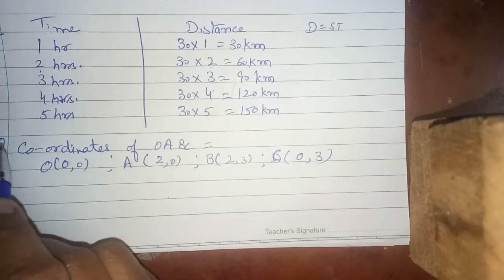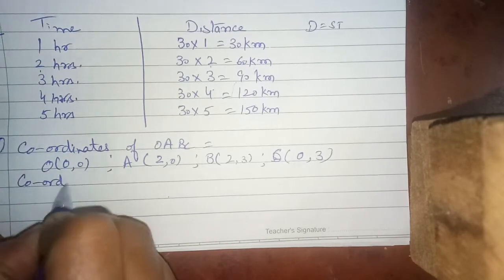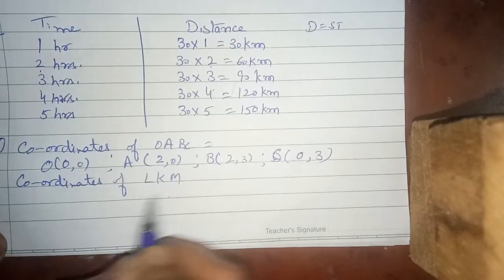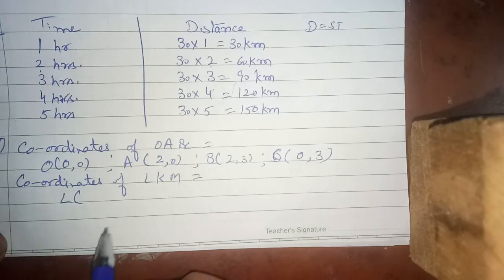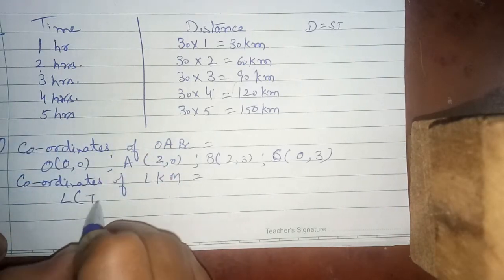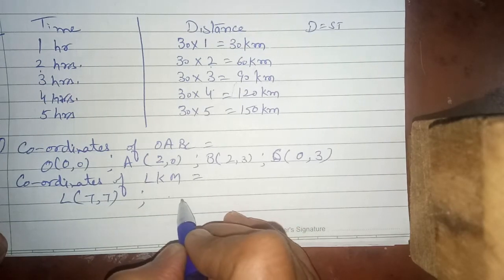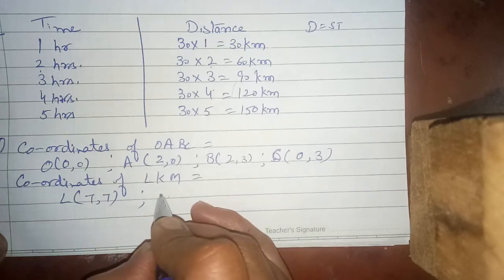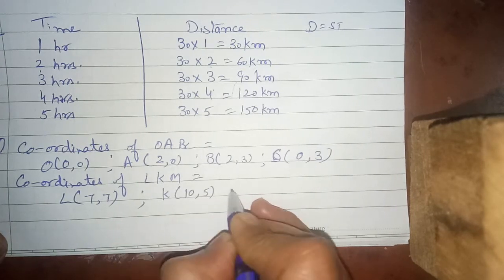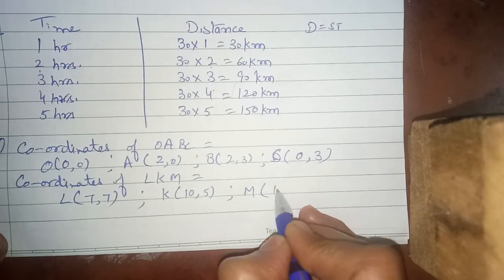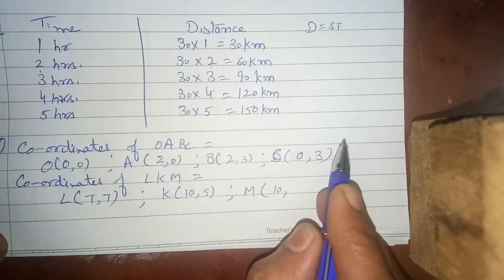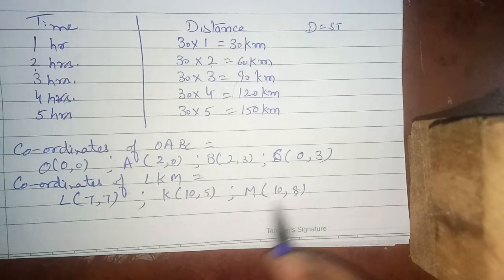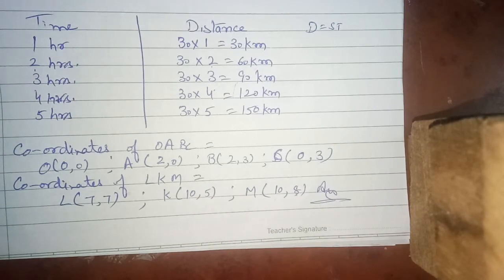Now I'll do L, K, M — you can do P, Q, R, S on your own. Coordinates of L, K, M: L's point — 7 going up and 7 on the other side, so L = (7, 7). K's point — X is 10 and Y is 5, so K = (10, 5). M's coordinate — X goes up to 10 and Y value from the other side is 8, so M = (10, 8). These are the answers. Accordingly, you have to solve the other questions of the exercise. If you have any doubt, you can send me your doubt on my personal number 999-170-1313. Thank you.